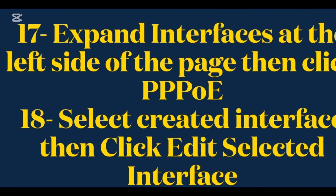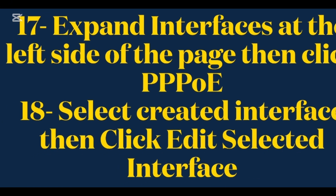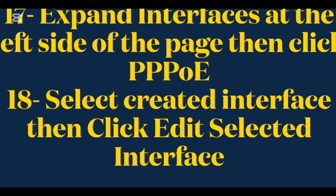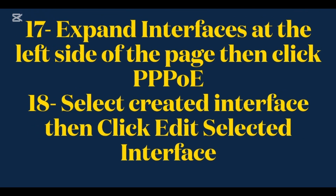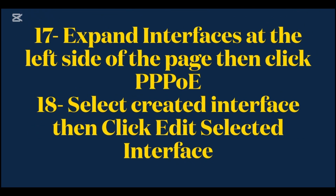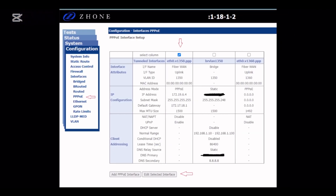Expand Interfaces at the left side of the page, then click PPPoE. Select the Created Interface, then click Edit Selected Interface.